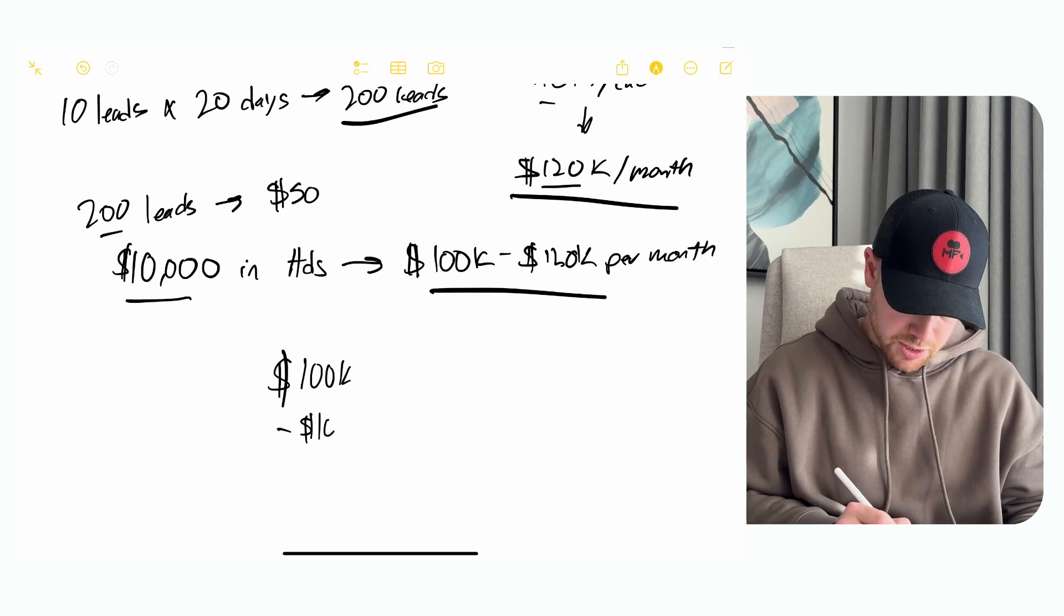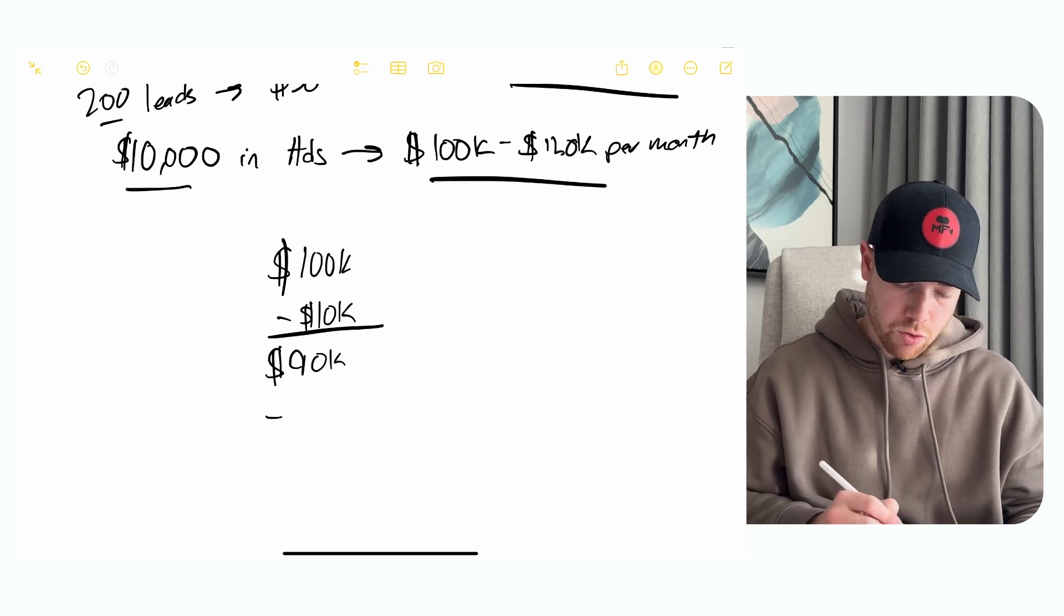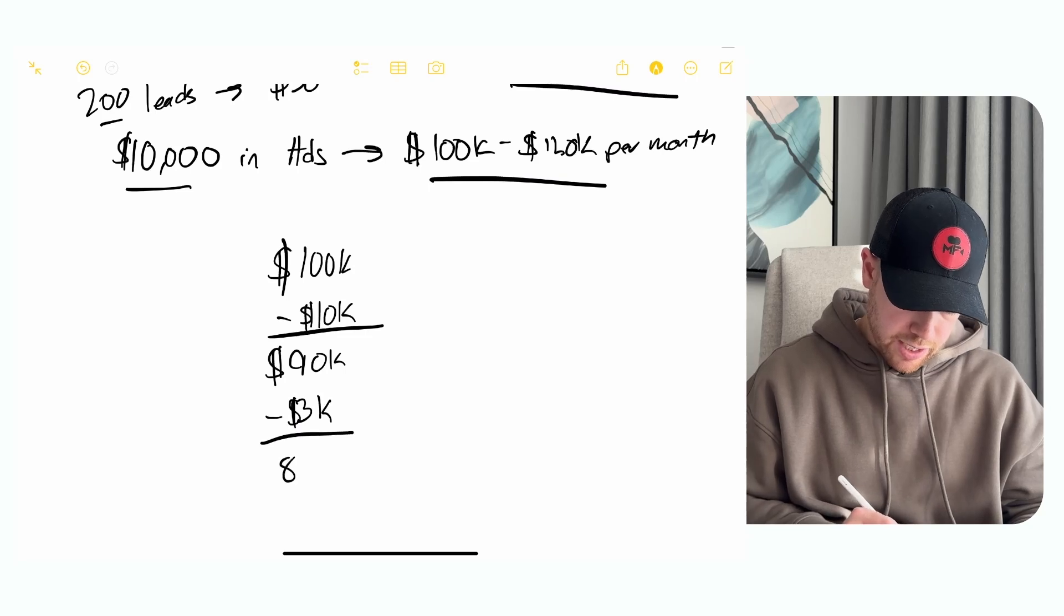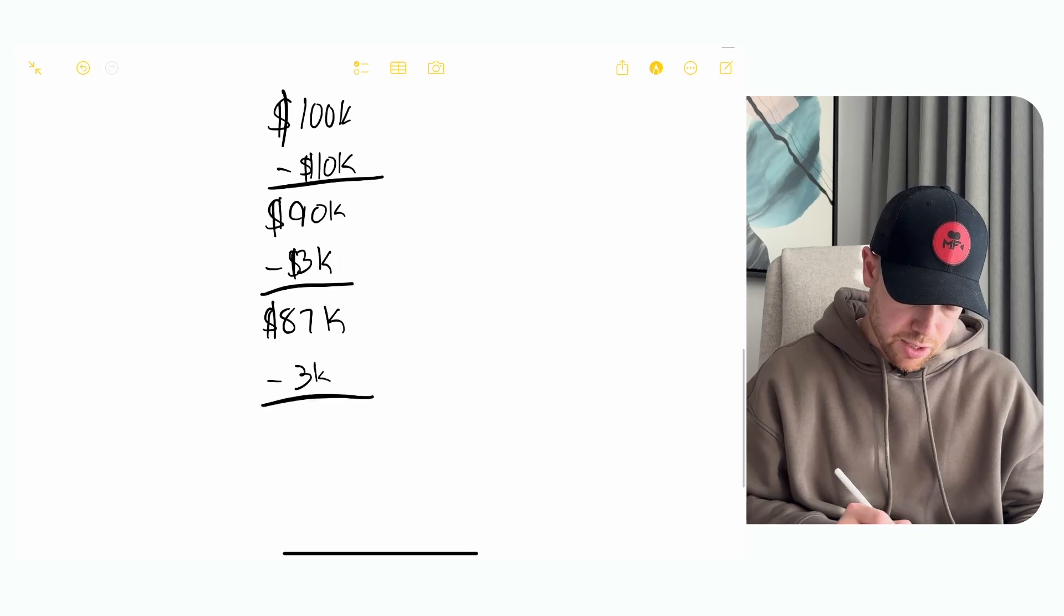So 100K minus, let's say 10K in ads is going to put you at $90,000 minus, let's say your payroll for a shooter full-time is like 3K a month. So then that puts you at 87K.